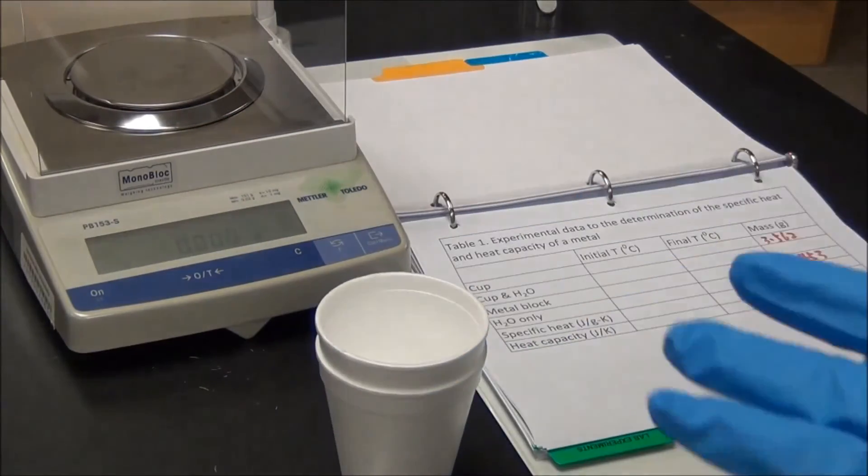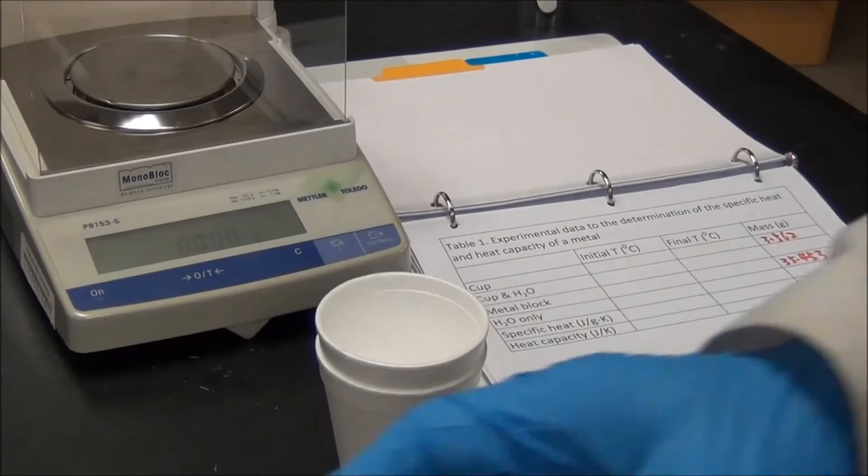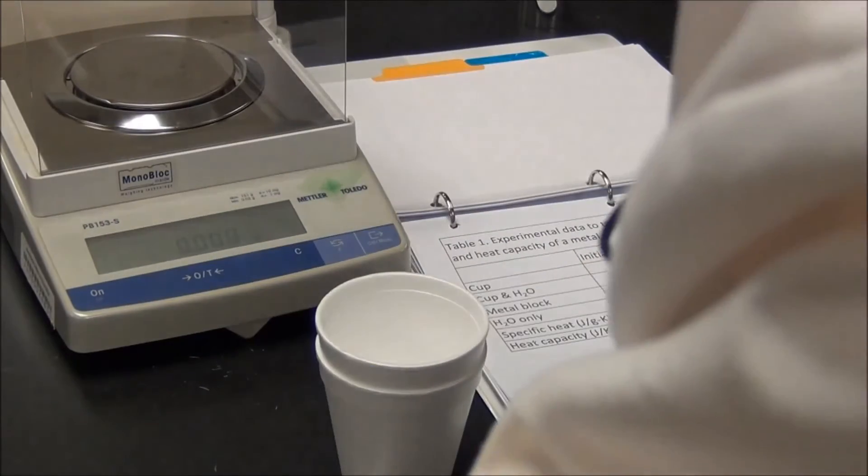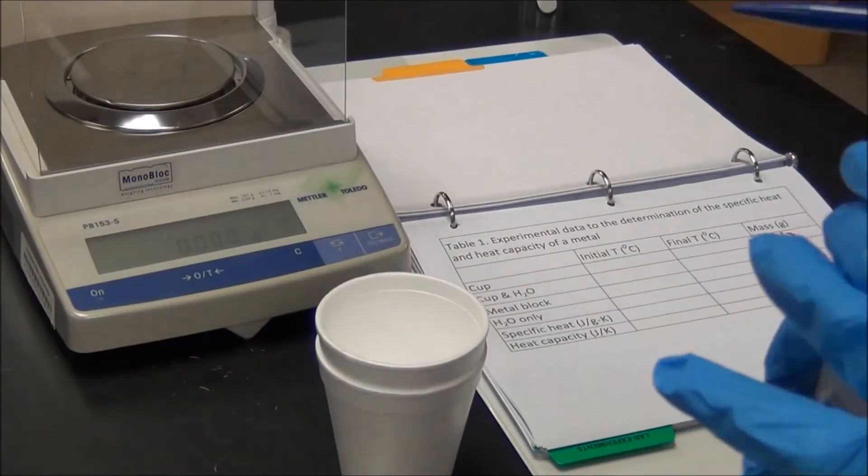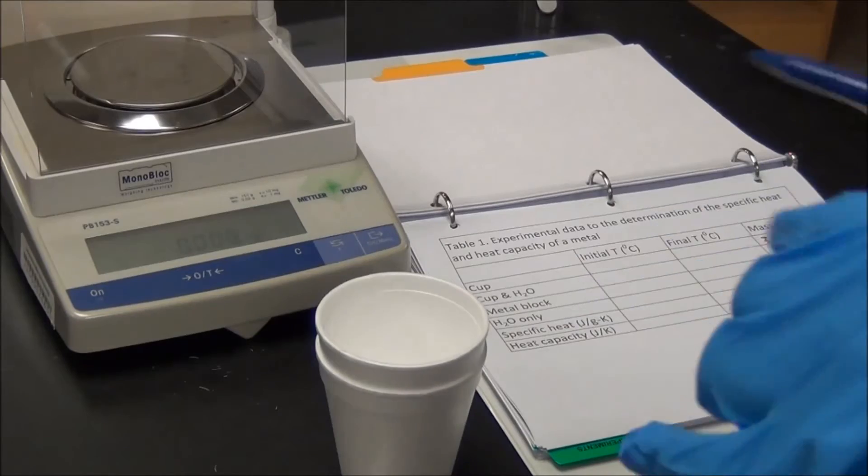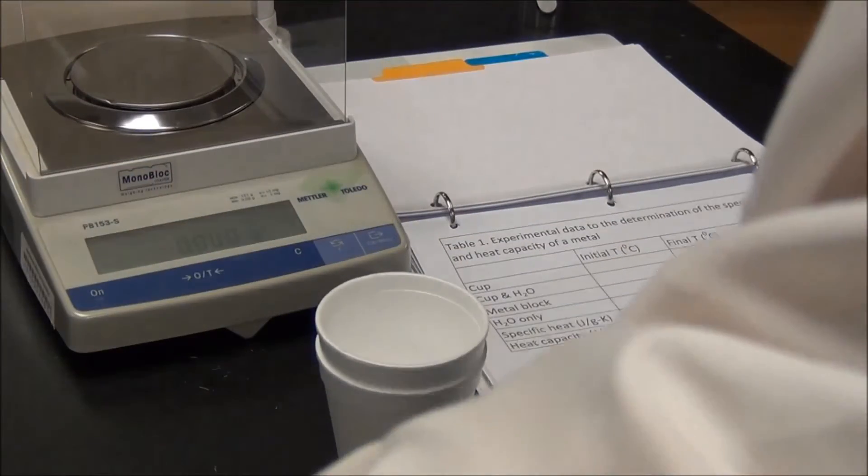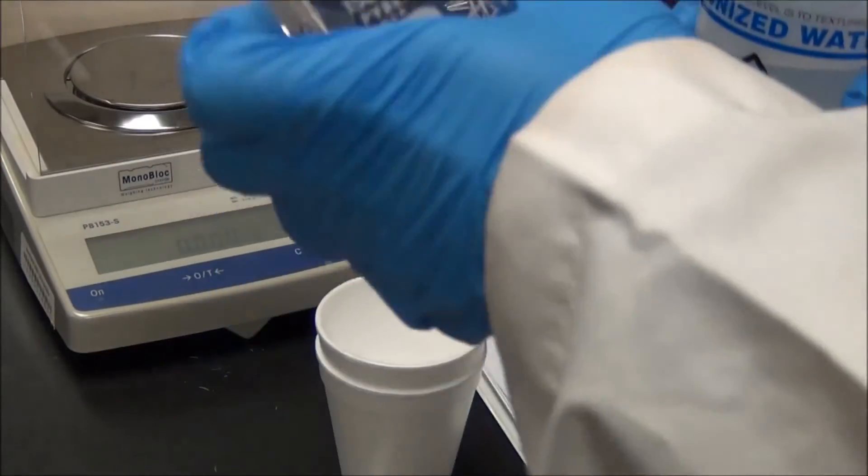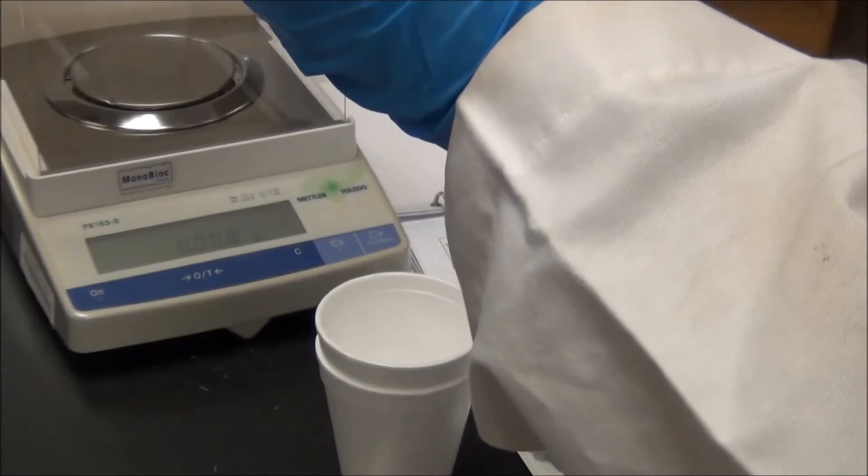And then we need to add about 30 milliliters of water into the calorimeter. Because this does not need to be exact, so we just use this cup to take our measurement.